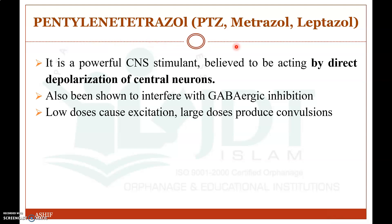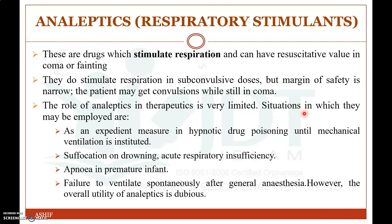The next drug is pentylenetetrazole, also known as metrazole or leptazole. It is a powerful CNS stimulant believed to act by direct depolarization of central neurons. It also appears to interfere with GABAergic inhibitory neurotransmission. At low doses it causes excitation, but at large doses it produces convulsions similar to those of picrotoxin and strychnine.